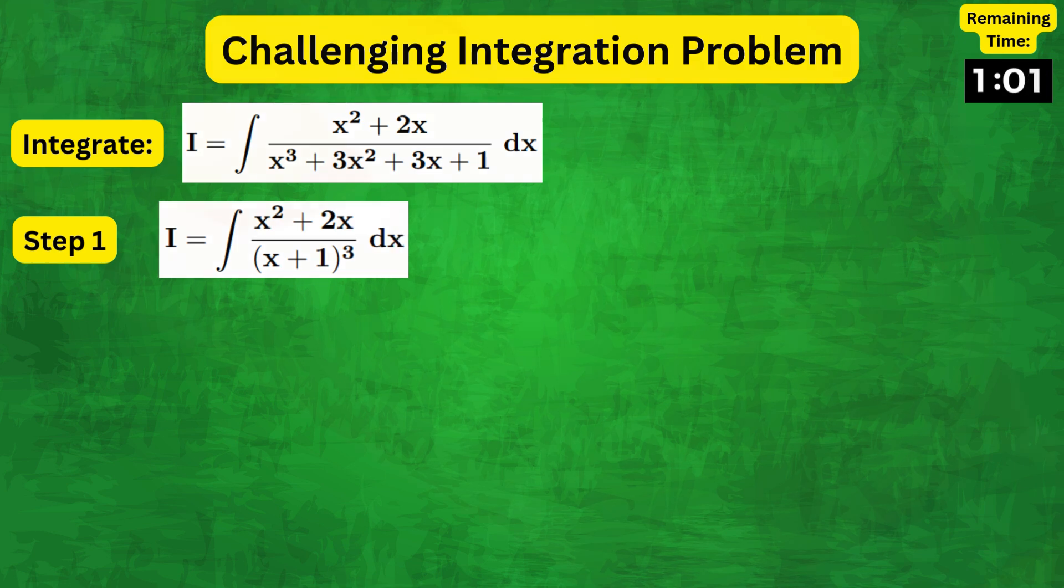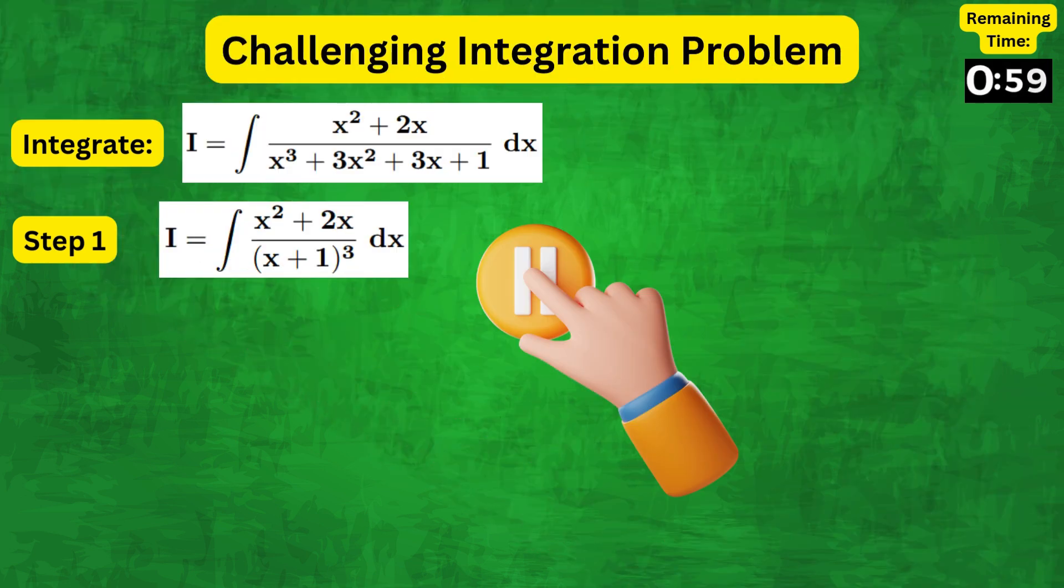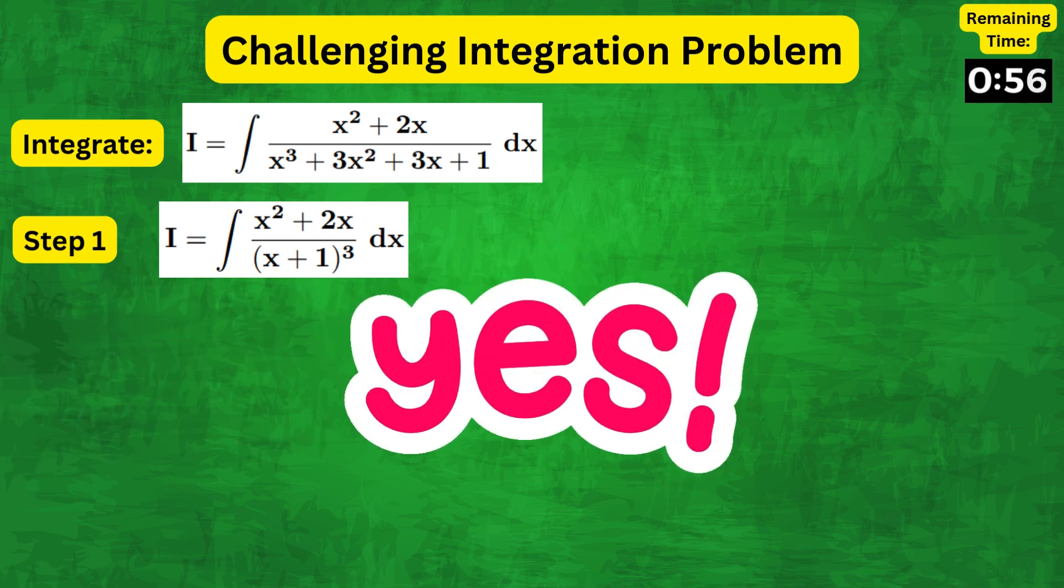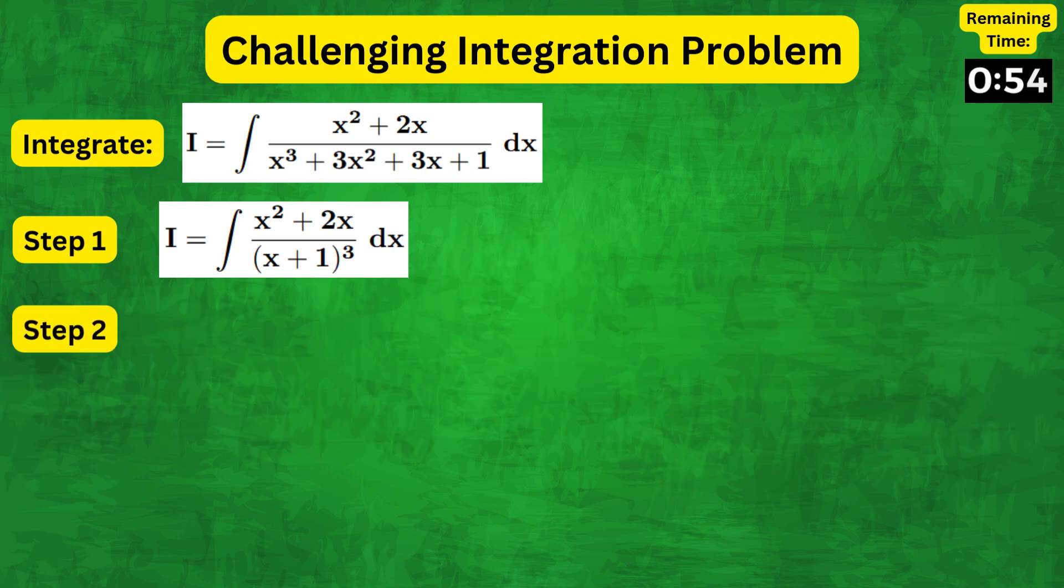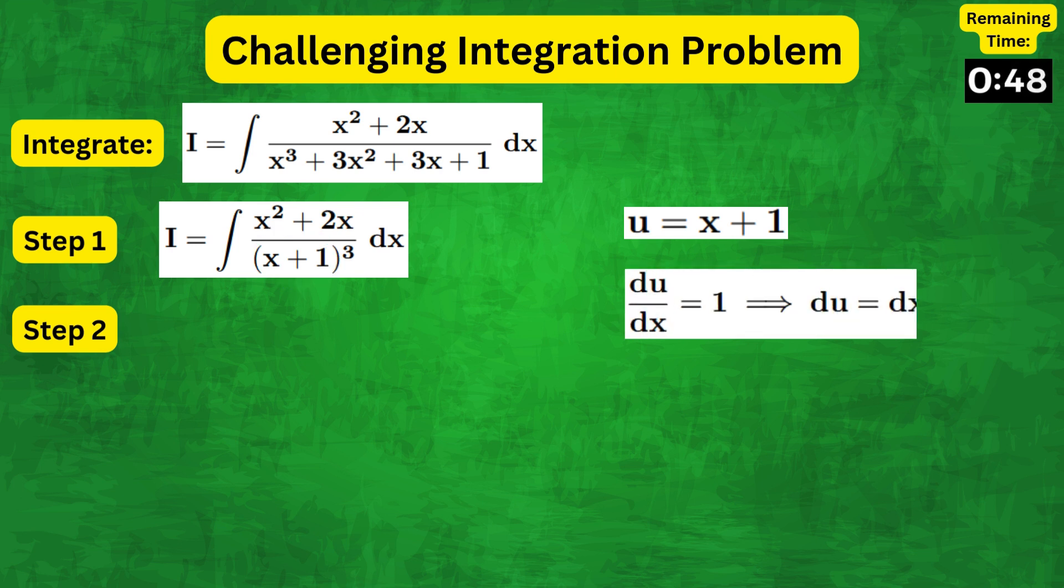Here, I would suggest to pause the video to think about what the next steps might be. Yes, you are correct. We can use the substitution u equals x plus 1, so that du by dx equals 1 and x equals u minus 1.